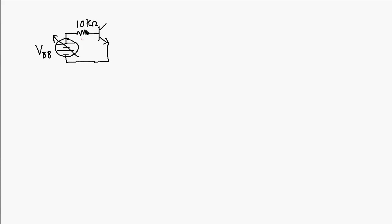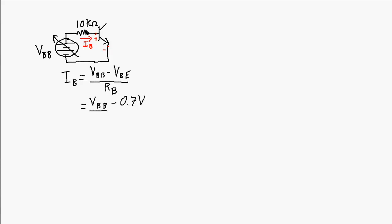One thing we know about this circuit is that as long as VBB is a large enough voltage to overcome this base-emitter voltage drop — as long as it's able to overcome that 0.7 volts across this PN junction — there will be 0.7 volts across the PN junction and we'll have some amount of base current going into the base. The value of the base current will be VBB minus the base-emitter voltage divided by the base resistance. VBB is variable, but that base-emitter voltage is approximately a constant 0.7 volts, and the base resistor is 10 kilo-ohms.